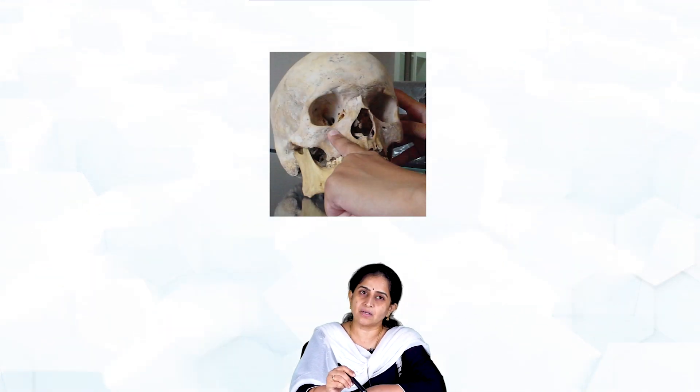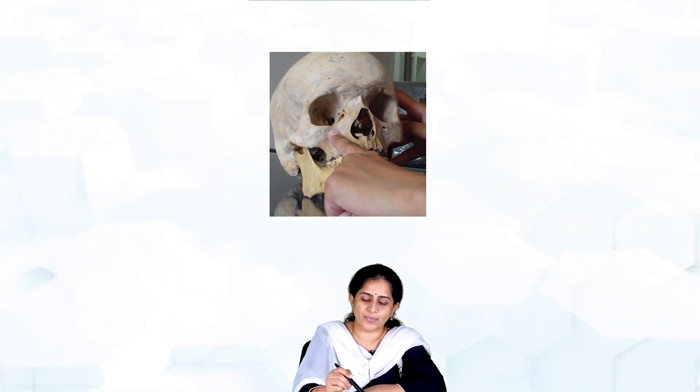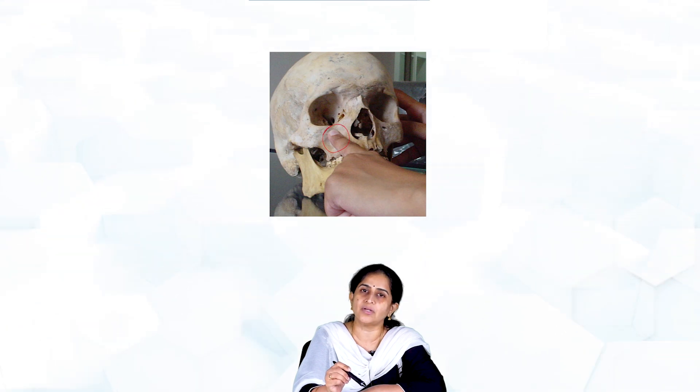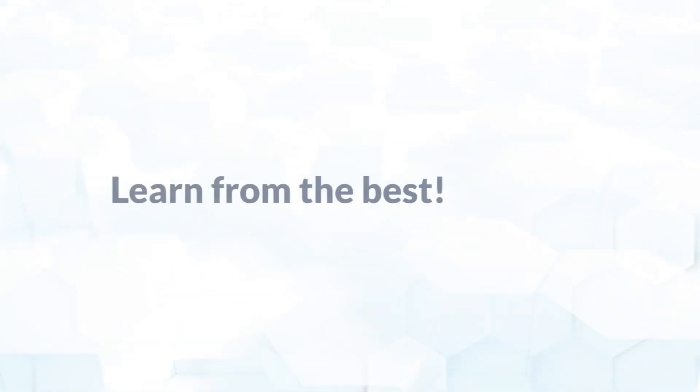In an infraorbital nerve block, we are trying to palpate for the infraorbital foramen because that is our target site.